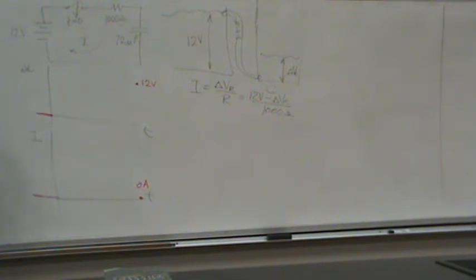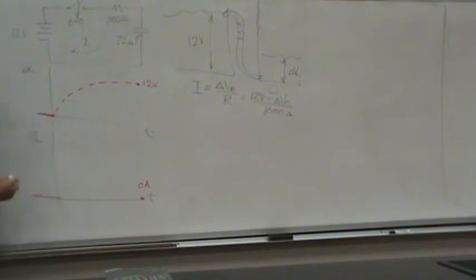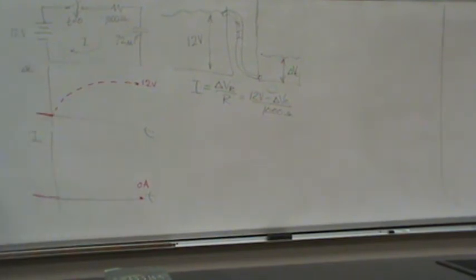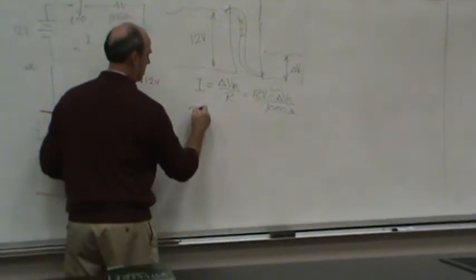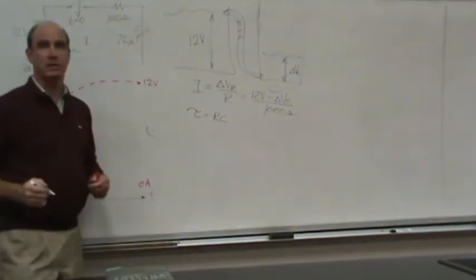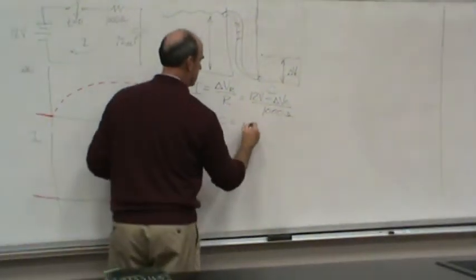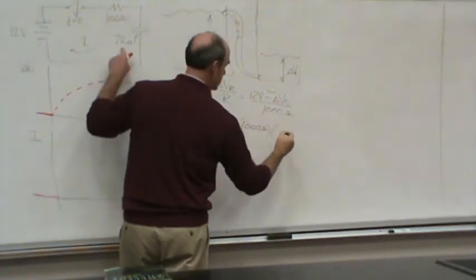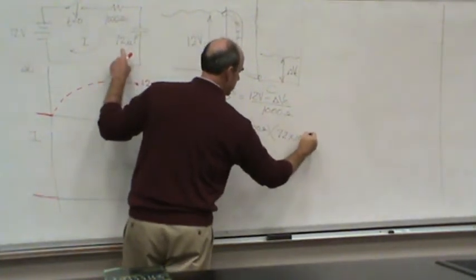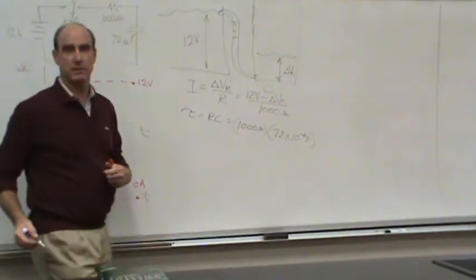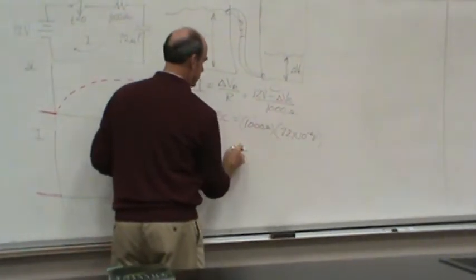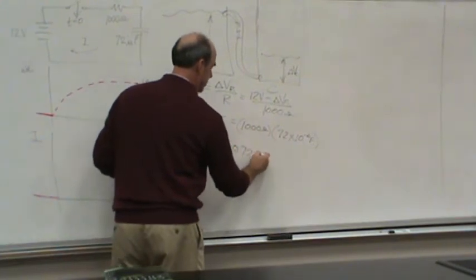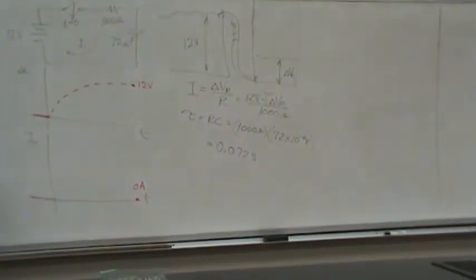And the shape of these curves is exponential, so we go something like that. Now, what is the value of tau? It's R times C, so that's a thousand ohms times 72 times 10 to the minus 6 farads. Okay, that's 72 microfarads. That equals 0.072 seconds, is that correct? Yes.